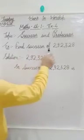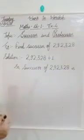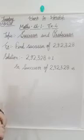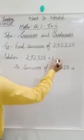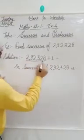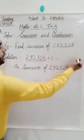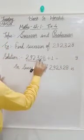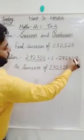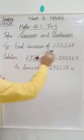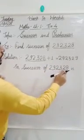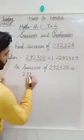We have an example: find the successor of 292328. To find the successor, we will just add 1 on its ones place digit. The ones place digit is 8, and 8 plus 1 is 9. We write the remaining number as same. So the successor of 292328 is 292329.